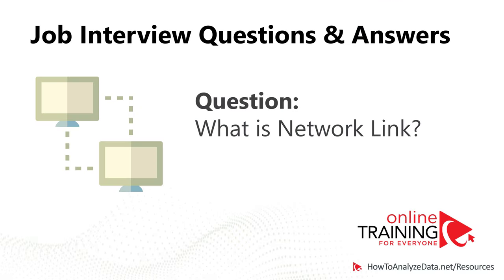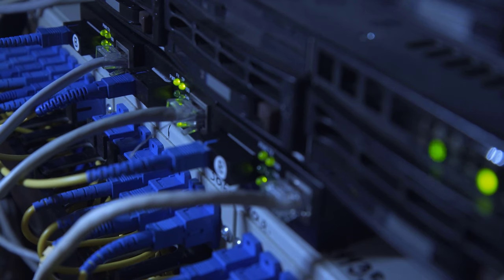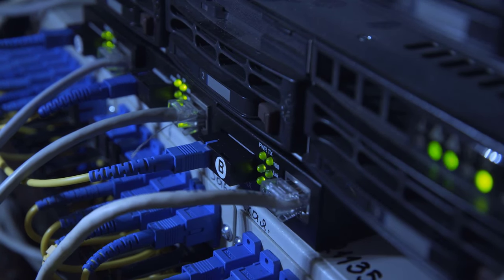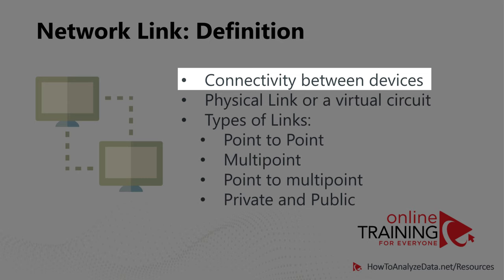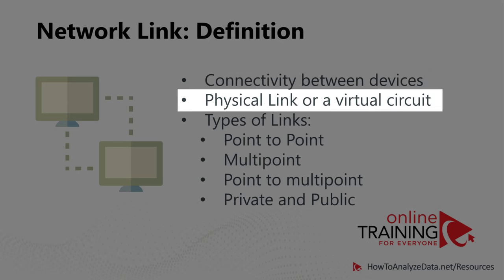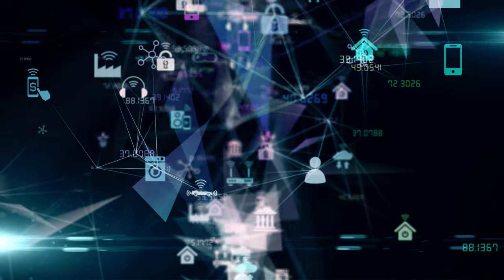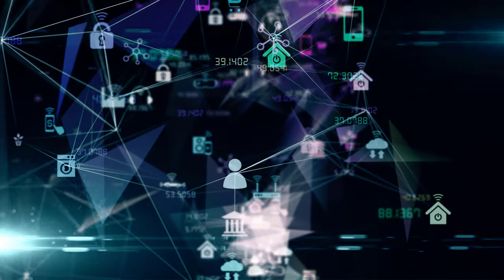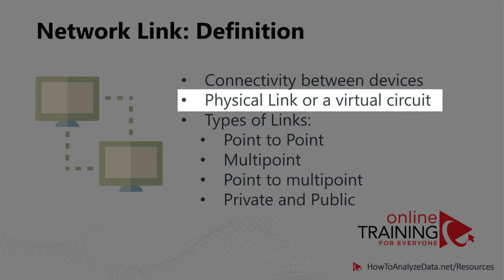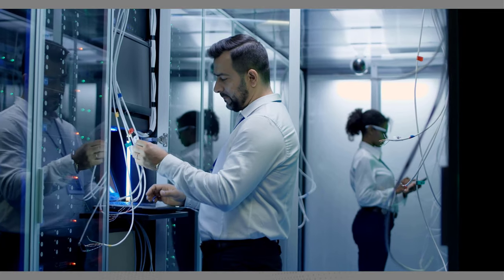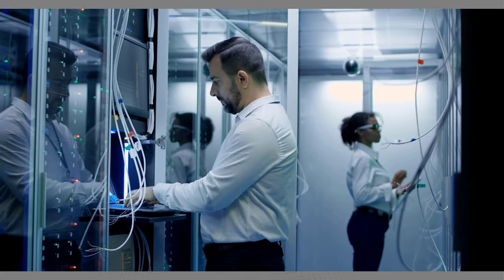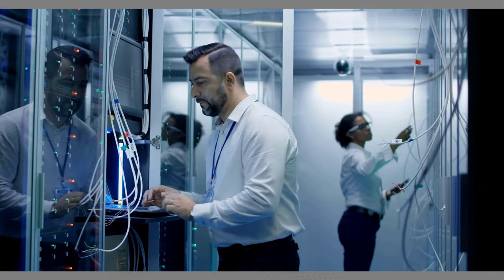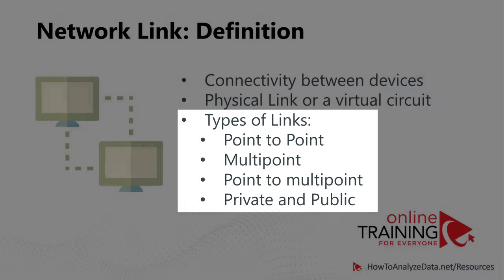A lot of times you might be asked, what is network link? Network link is a communication channel that connects two or more devices for the purposes of data transmission. Typically, a network link may be a dedicated physical link or a virtual circuit that uses one or more physical links, or shares a physical link with other telecommunication devices. The term network link is used in computer networking to refer to communication devices that connect nodes of the network. There are four main network link types: point-to-point, multipoint, point-to-multipoint, and private or public.